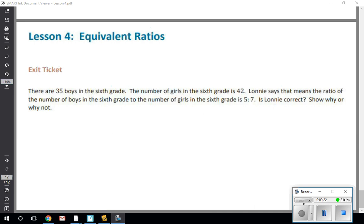The first example: There are 35 boys in sixth grade. The number of girls in sixth grade is 42. Lonnie says that means the ratio of the number of boys in the sixth grade to the number of girls in the sixth grade is 5 to 7. Is Lonnie correct? Show why or why not.